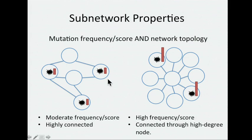We'd like to identify cases where the individual genes might not be significant on their own — mutated at moderate or rare frequencies — but they're very highly connected. And perhaps distinguish those from cases where we do have genes that are highly mutated or highly significant, but that connection is through perhaps some high-degree node, which isn't so surprising. Biological networks have this sort of uneven topology, so we need to simultaneously account for both mutation frequency or score and the network topology.